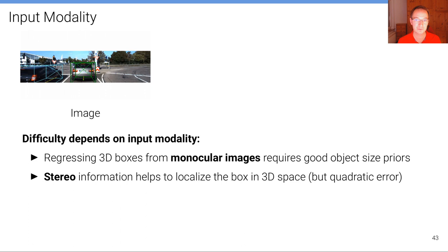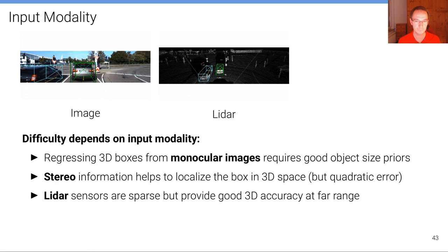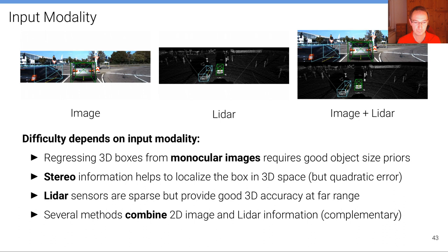If we have two images from a stereo camera, this helps localize the box in 3D space. But as we saw in the reconstruction lecture, there's a quadratic increase in error with distance, so it's still not as accurate as having a 3D point cloud from radar or LiDAR. In contrast to image sensors, LiDAR sensors are sparse but provide good 3D accuracy at far range, making localization much easier. However, due to their sparsity, they have lower resolution, making it harder to detect small objects like pedestrians.